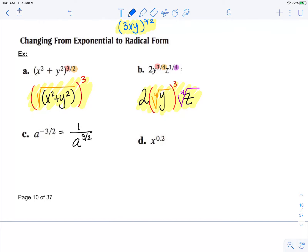We know that our denominator can never equal zero. Therefore, a cannot equal zero, so we have to state that whenever we have something in our denominator.